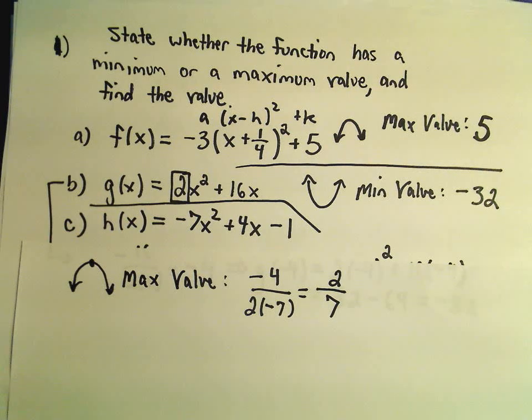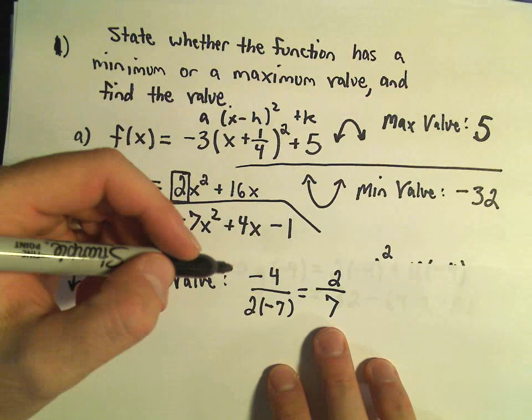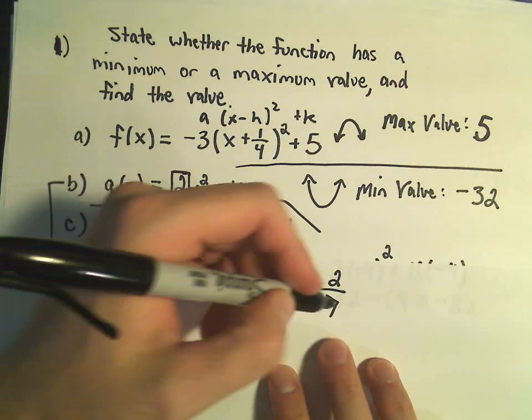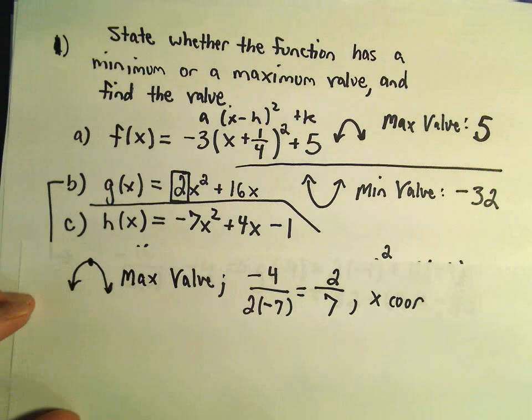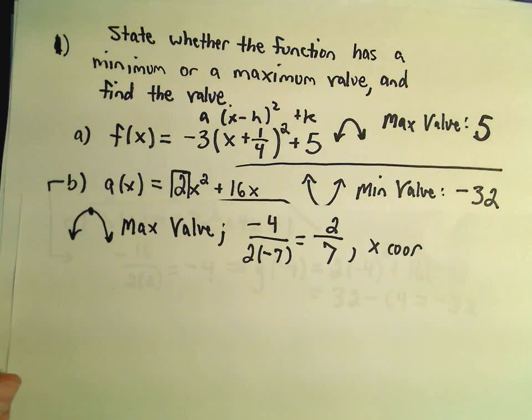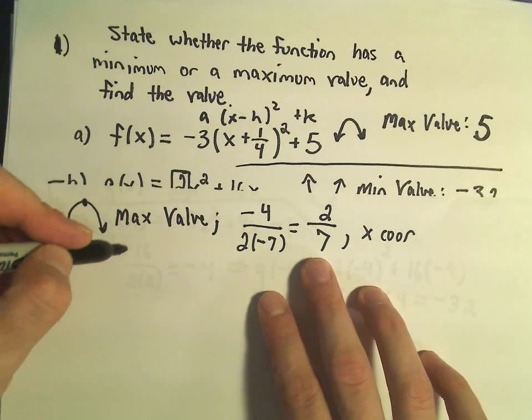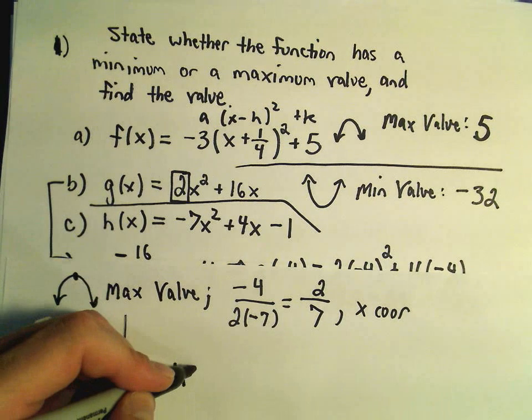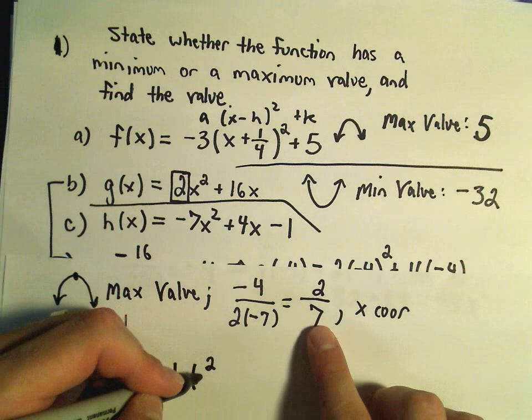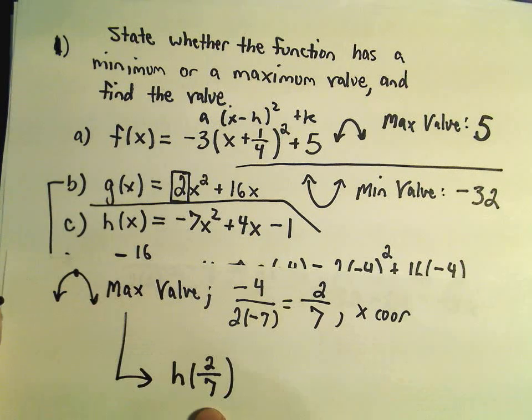So in this case, again, this is the x coordinate, and I should be careful, this is not the max value, this is the x coordinate. I think I said it correctly, but it kind of ended up looking like I was saying it was a maximum value. So to get the max value, again, that's the y coordinate we get out when we plug in our x coordinate of 2 sevenths.